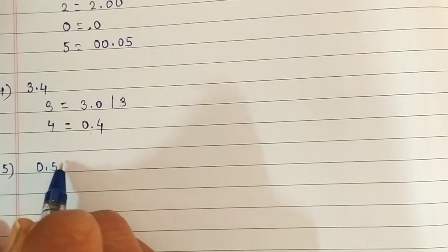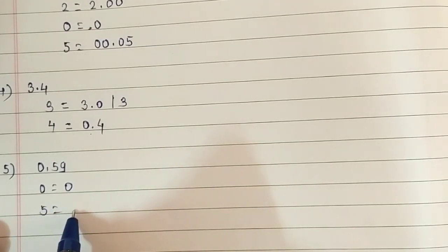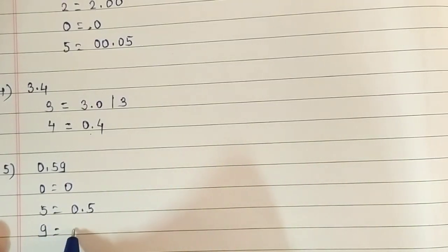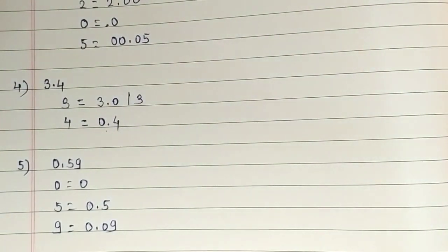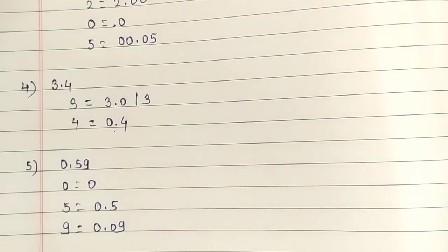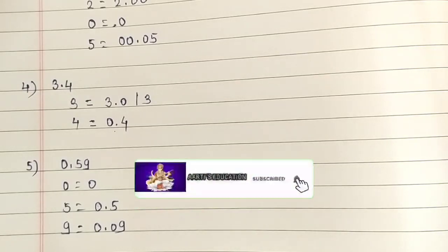Now the fifth question is 0.59. Here the place value of 0 is 0 — it is in the unit place. Then 5's place value is 0.5, and 9's place value is 0.09. Look, it's very easy — you just have to give a decimal point at the appropriate place. Let's practice it very well. Don't forget to subscribe my channel if you are new. See you in the next video. Thanks for watching!